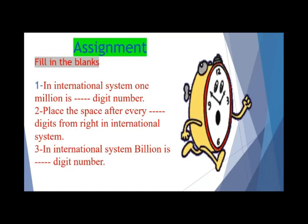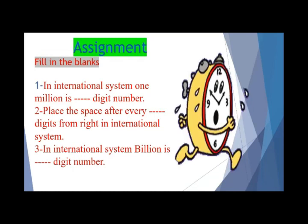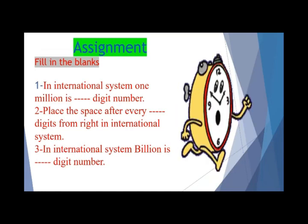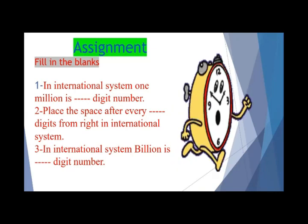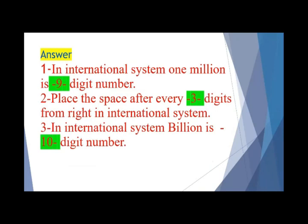Assignment — fill in the blanks. In the international system, one billion is a blank-digit number. Place the space after every blank digits from the right in the international system. In the international system, billion is a blank-digit number. Students, you have 10 seconds for each blank — remember your answers. Now the answers: in the international system, one million is a nine-digit number. Place the space after every three digits from the right. In the international system, billion is a 10-digit number.